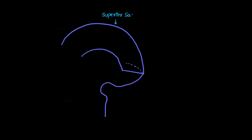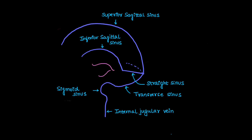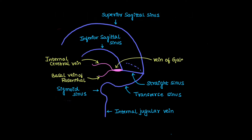Let's look at the basic anatomy of all these — you can draw along with me. This is the superior sagittal sinus along the superior aspect of the falx, and the inferior sagittal sinus along the inferior aspect of the falx. This is the straight sinus, transverse sinus, and sigmoid sinus, which continues as the internal jugular vein. The internal cerebral veins and basal veins of Rosenthal join to form the vein of Galen, which further joins the straight sinus.